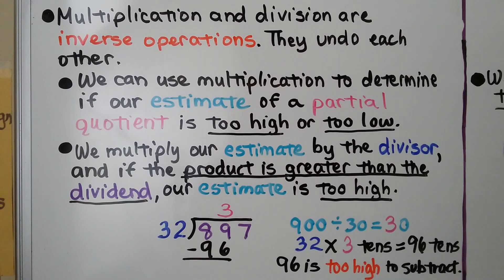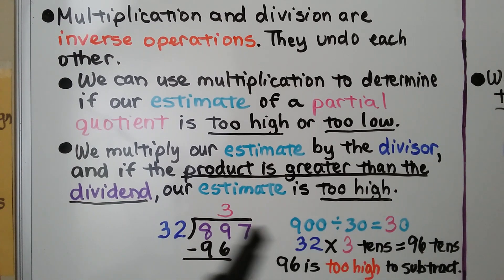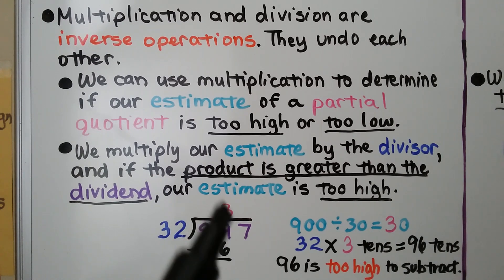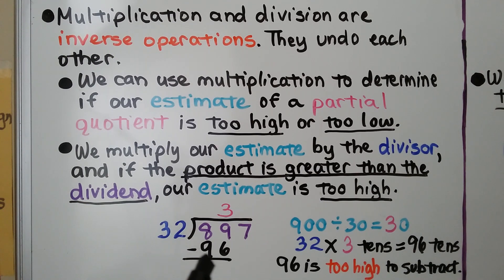We have 897 divided by 32. We estimate 900 divided by 30 is equal to 30. So we try putting a 3 up in the tens place because 30 is 3 tens. And 32 times 3 tens is 96 tens, and 96 is too high to subtract from 89.